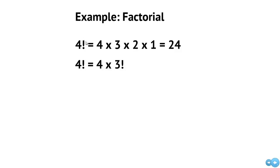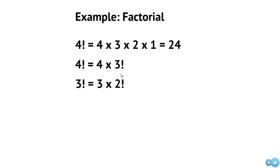We can define it recursively by saying 4 times 3 factorial. Then we can say 3 factorial is defined as 3 times 2 factorial. That's the recursive case — we've just taken it and broken it down into a smaller form of the same problem, where we now have 2 factorial.